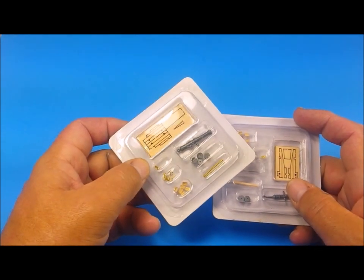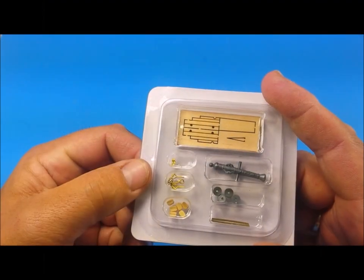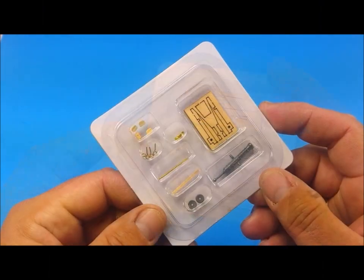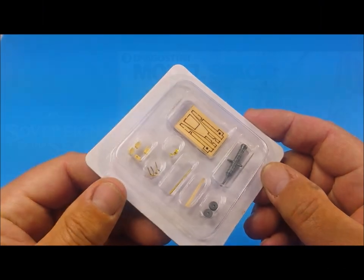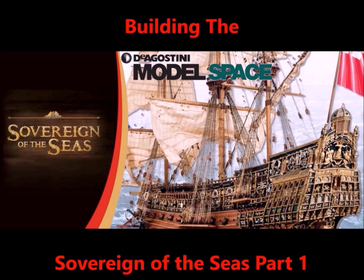There are two cannons supplied with the first pack. Each of these cannons are made from white metal and the carriages are from wood. Each cannon has a set of block and tackle that will need to be rigged later on. As part of the in-box review, I wanted to share some of the construction process.